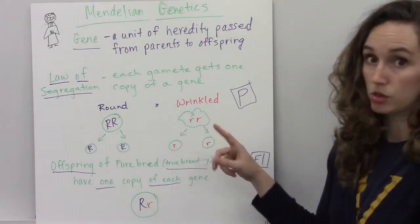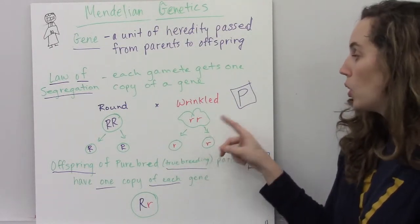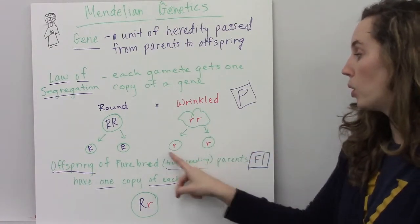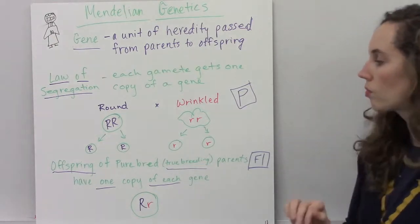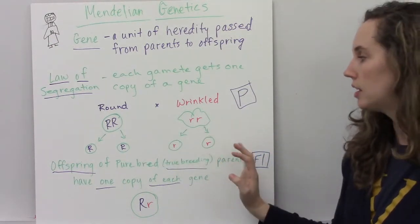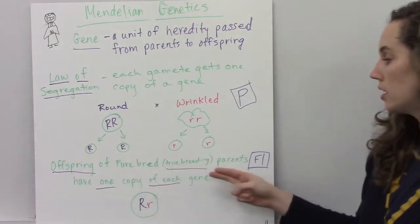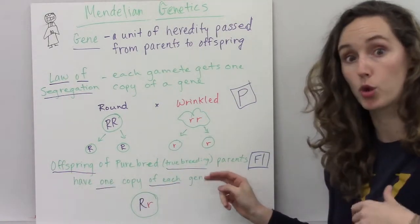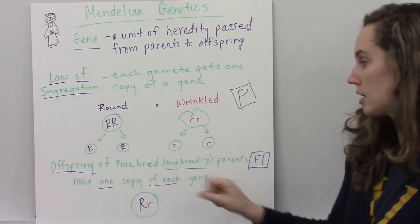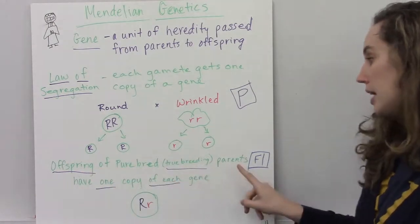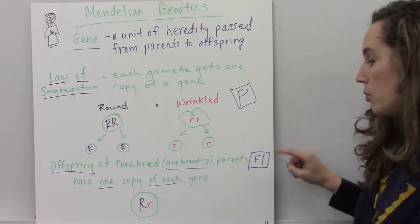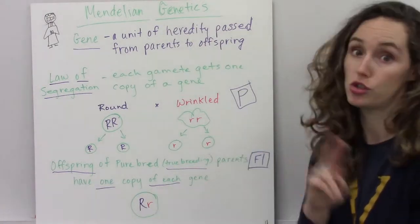The same is true for the wrinkled peas, which is the recessive allele. So you have a homozygous recessive organism, and its gametes are both going to have the recessive allele. He also came to the conclusion that if you make these two, the offspring of purebred, also another word for that is true breeding. If I took this gamete and this gamete from the plants and put them together to form an F1 generation, this F1 would have one copy of each gene.